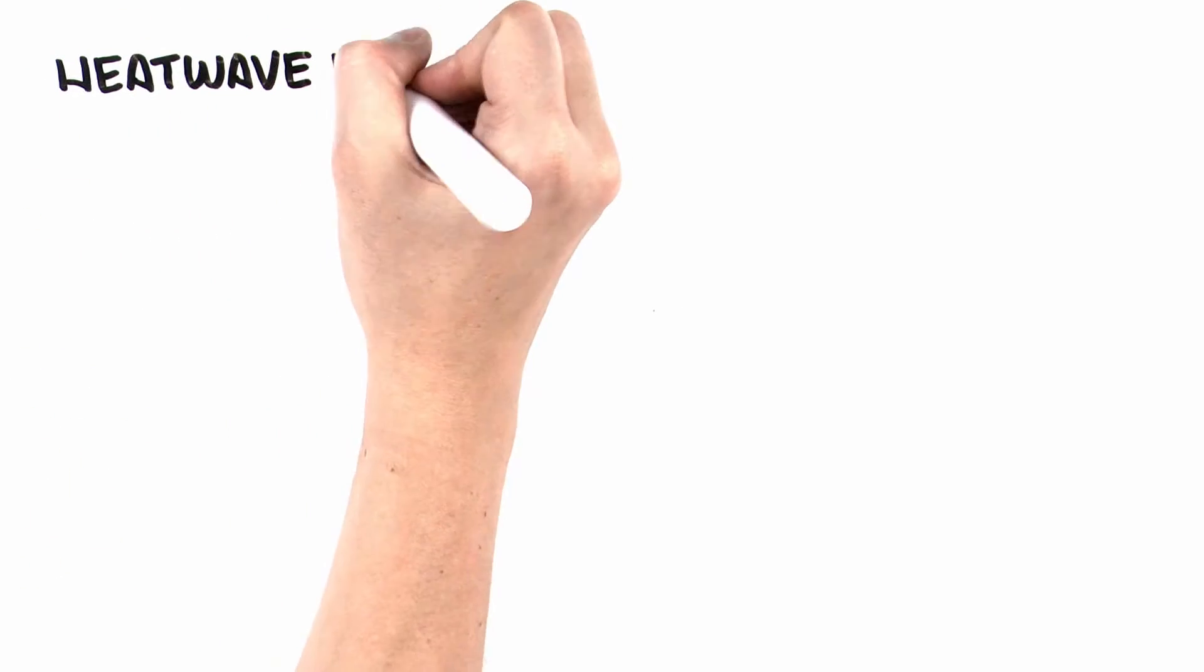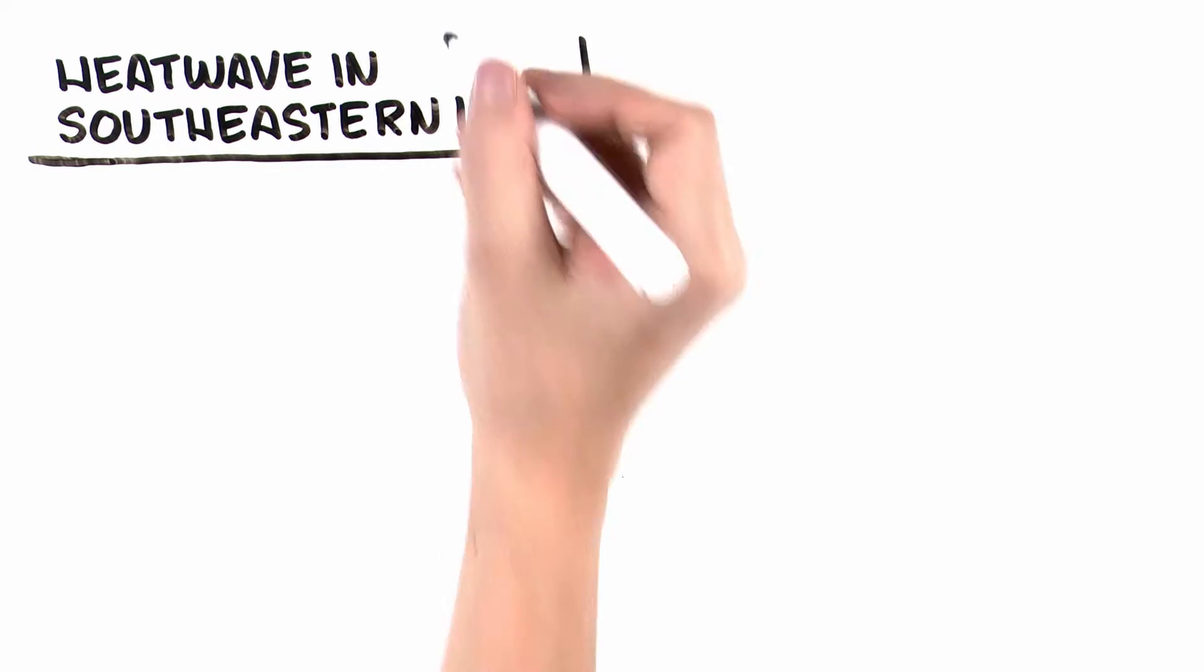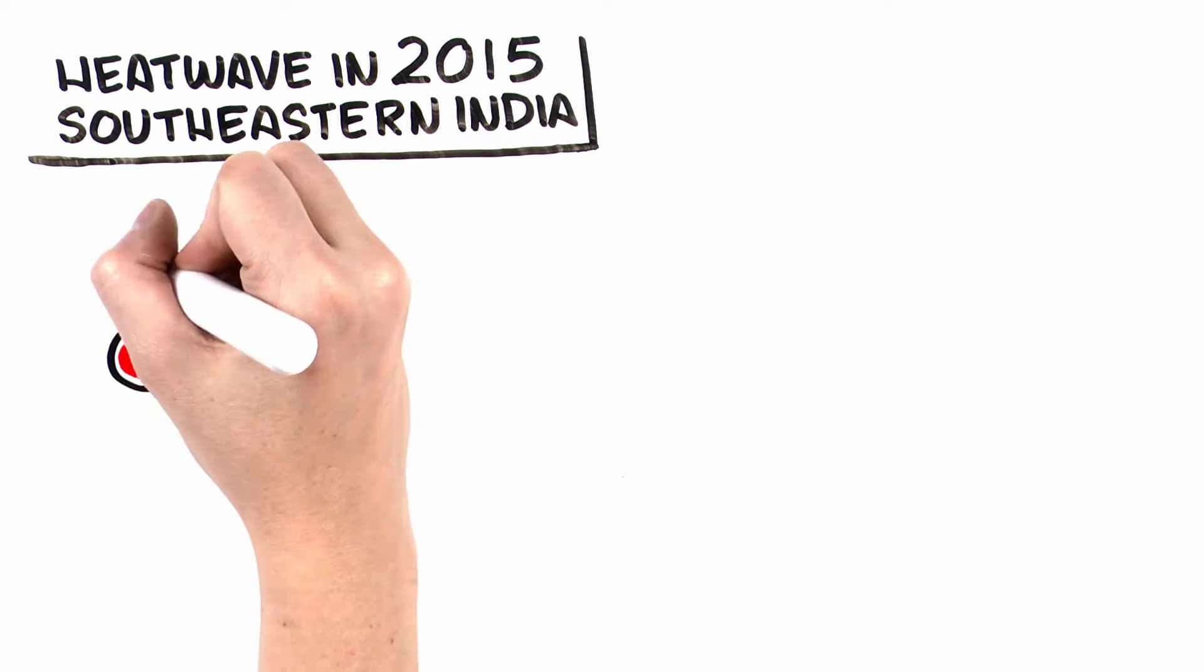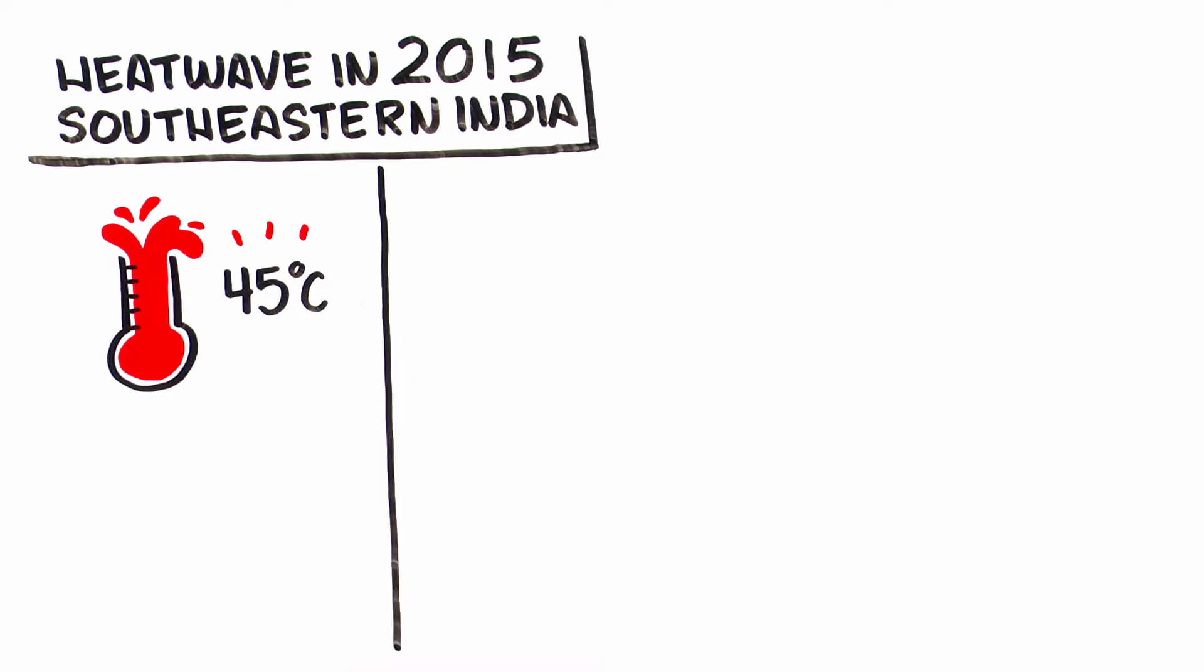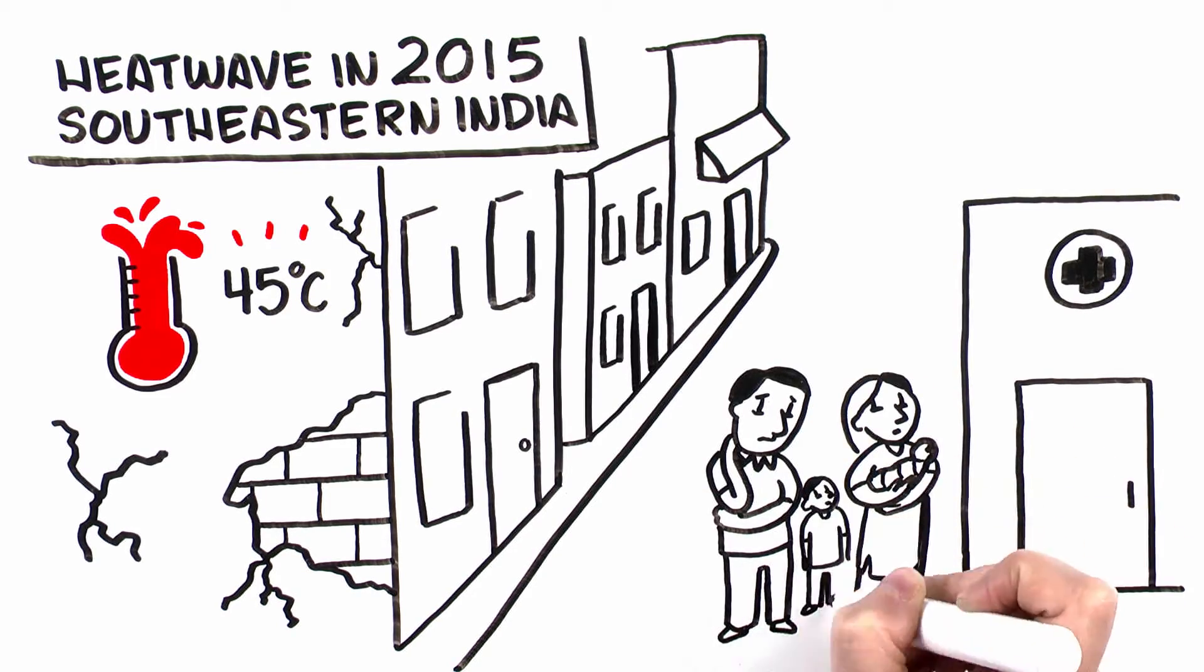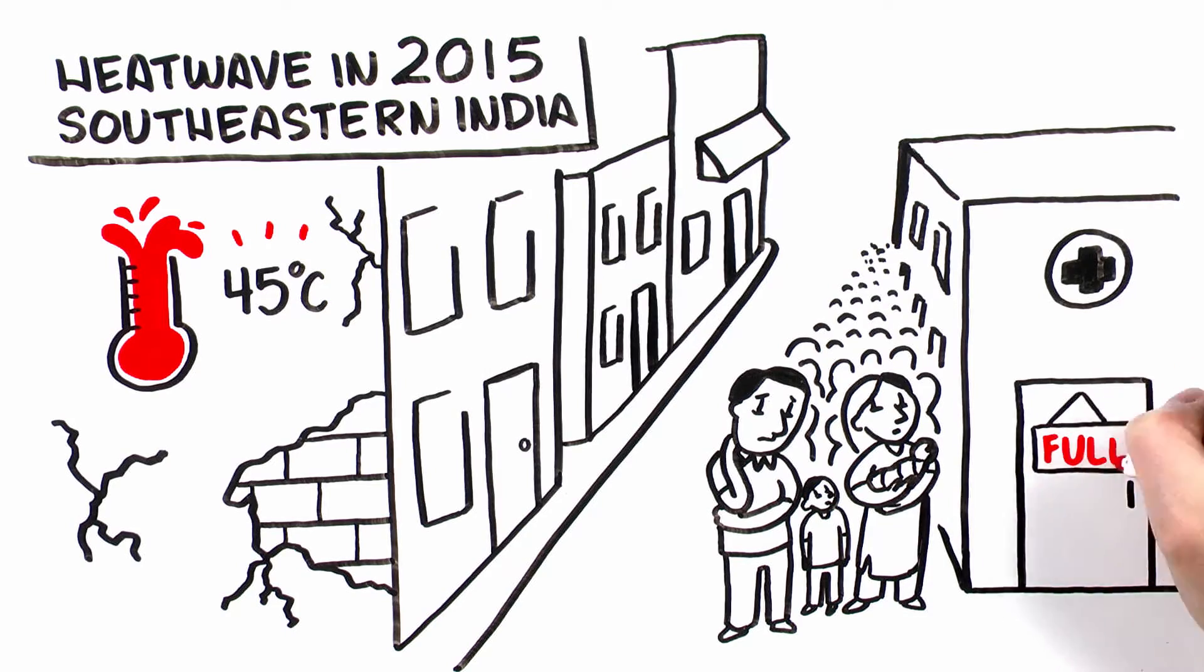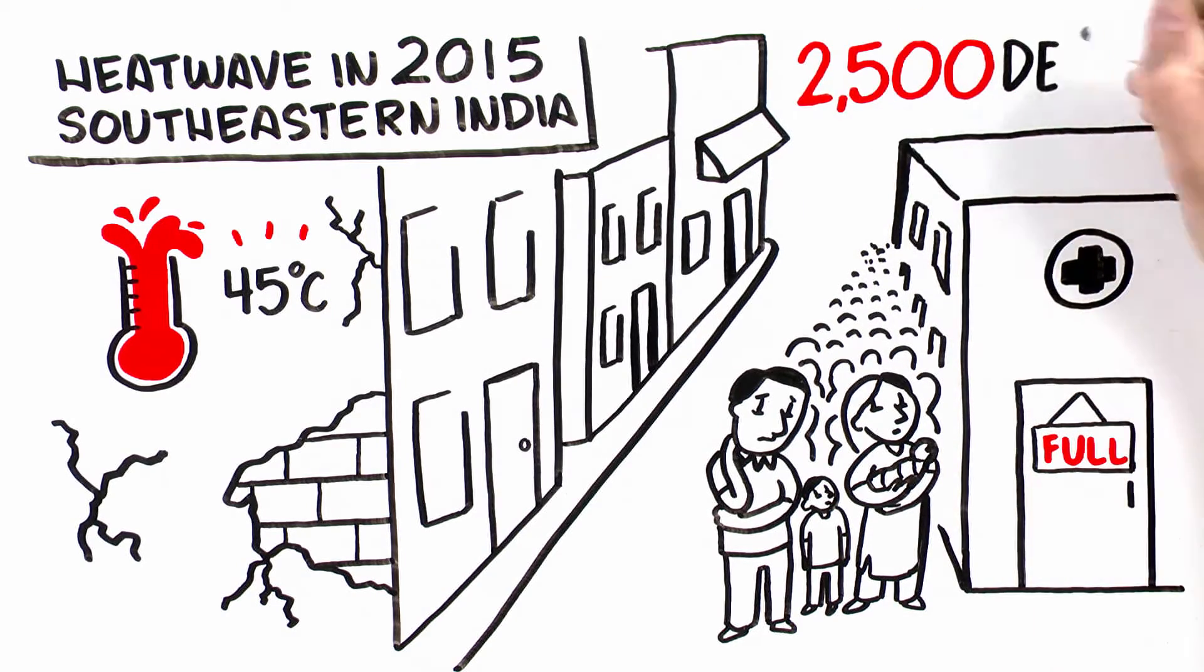Take, for example, the heat wave that gripped southeastern Indian states in late May of 2015. Temperatures topped 45 degrees Celsius. Hospitals were so crowded with patients suffering from heat-related conditions that some people were turned away. It's estimated the heat resulted in 2,500 deaths.